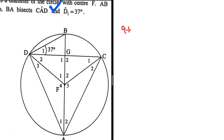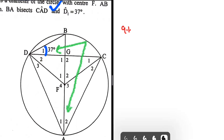Let's zoom in on D1. You should be able to see that arc BC subtends D1, but BC also subtends A2 at the circumference of the circle. So we're saying that D1 equals A2 because they are subtended by the same arc. That is the first angle equal to D1.